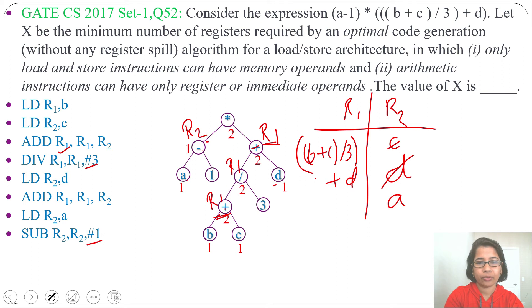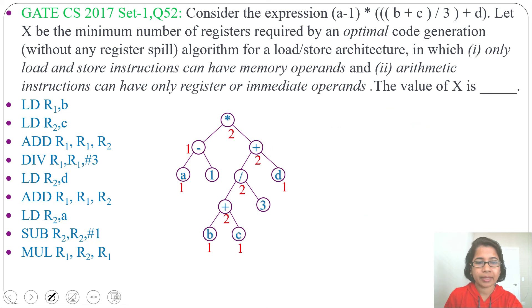Next, we need to do the multiplication. So R2 multiplication R1. That we can store either in R1 or R2. Let me load in R1. So multiplication R1 R2 R1. We write the machine instruction by using just 2 register. So here, X equal to 2. You can say answer is 2.